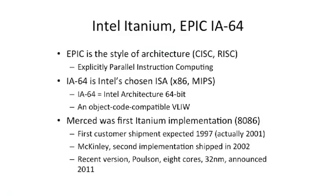The first few implementations: Merced was the first Itanium implementation — kind of like the 8086 for x86. Intel code names are named after rivers or places; you can't trademark a place name, so they avoid trademark issues that way. One big problem: it was supposed to ship in 1997, but first customer shipment wasn't until 2001 — a four-year miss. Meanwhile, superscalar had caught up.